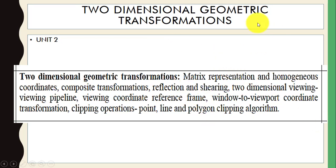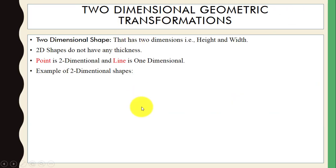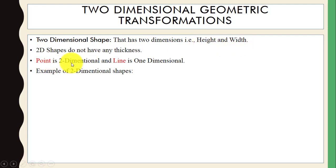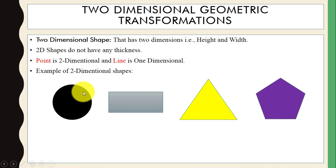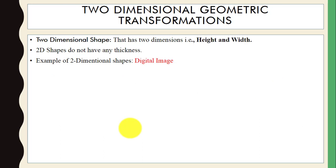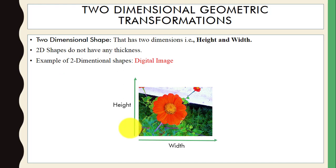In this video we will cover only the basics about transformation. A two-dimensional shape has two dimensions: height and width. Two-dimensional shapes do not have any thickness — only height and width. A point is two-dimensional, a line is one-dimensional. You can see examples of two-dimensional shapes here — they have only height and width with no thickness.